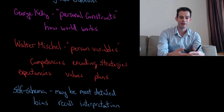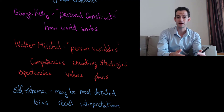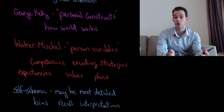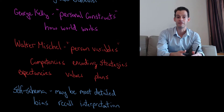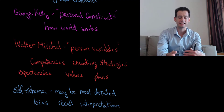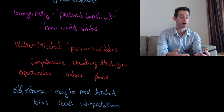We have to remember that our self-schema is subject to the possibility for bias. It's going to influence how we recall things and how we interpret things. Many people show things like self-serving bias — the idea that we tend to remember our successes and tend to forget our failures — and this is going to influence our views of ourselves and our views of our own competencies.